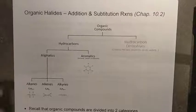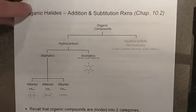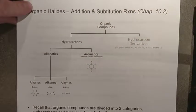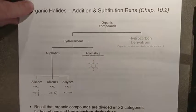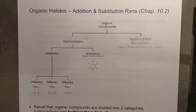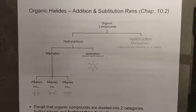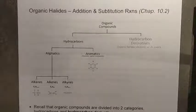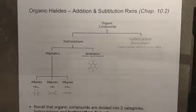What we're going to do is start with 10.2 and take a look at two things. The first is something known as the organic halides, which is a derivative or a functional group. Then we're going to take a look at the addition and substitution reactions that are related to making and creating them.